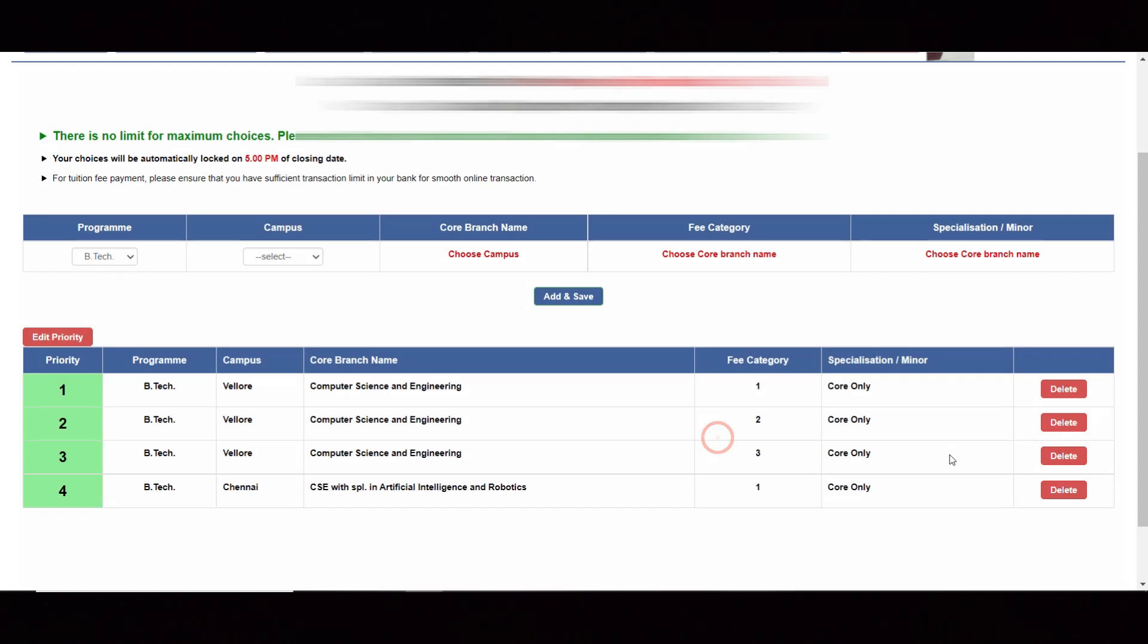If I want to delete this particular category 3, just click on delete so it will be deleted. The one which is at fourth option now came to third option. This is how the rearrangement happens.